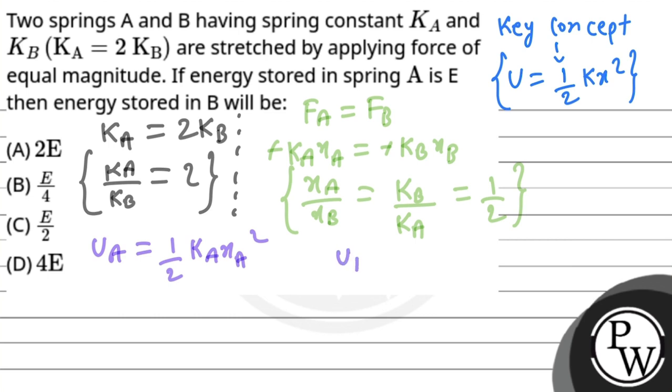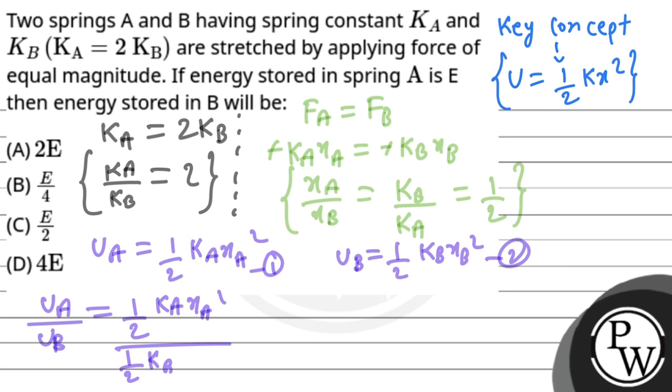UB is half KB XB squared. Dividing equation 1 and equation 2, we will get UA upon UB equals half KA XA squared upon half KB XB squared. So half will be cancelled out and we get UA upon UB equals KA upon KB times XA upon XB squared.